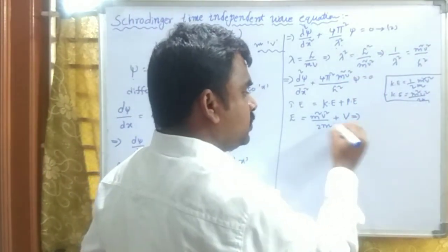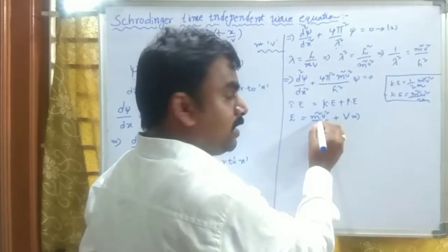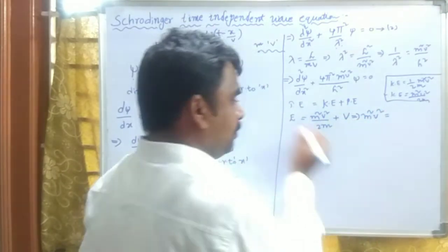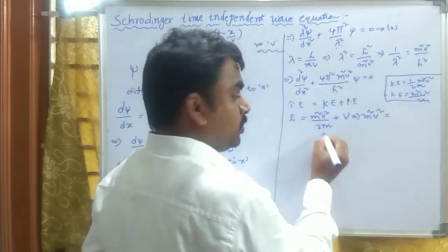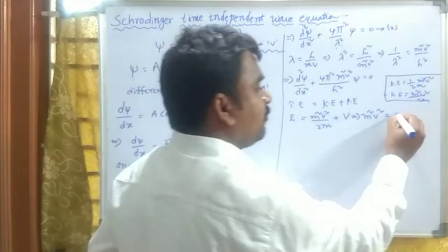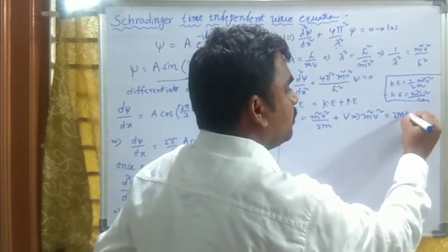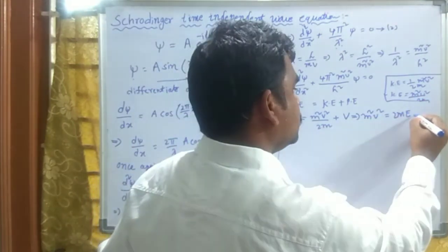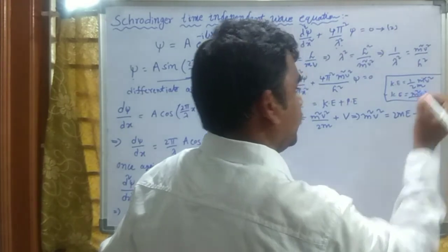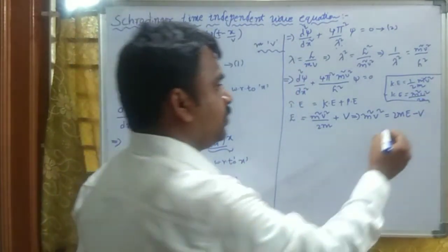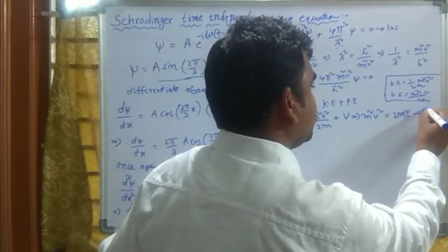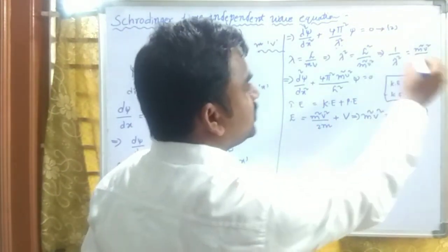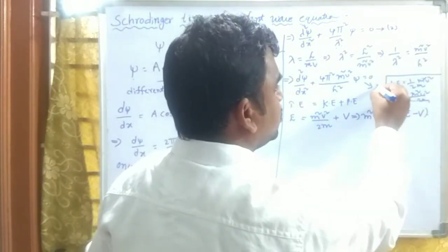We want to isolate m²v². Rearranging: m²v² = 2m(E − V). This is Equation 4.